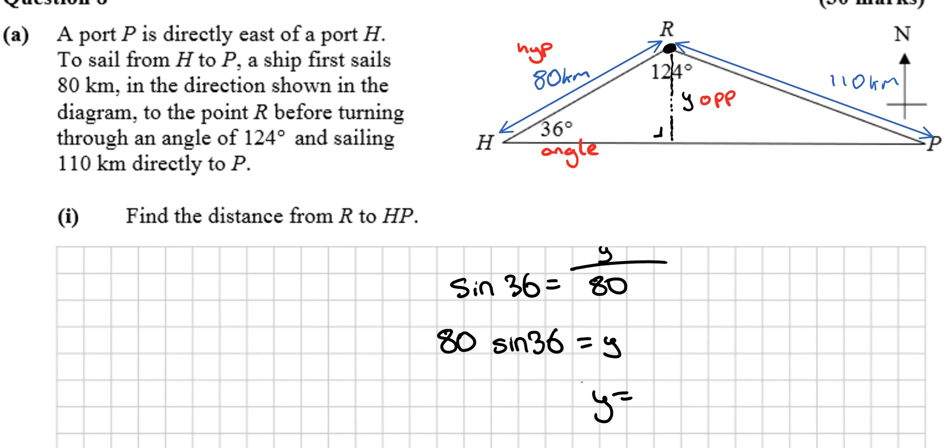Alternatively, you could have found this angle to be 20 degrees by subtracting 124 and 36 from 180, then doing sine 20 = y/110.